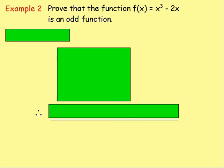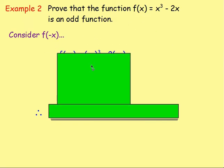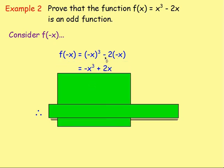Example 2: prove that the function f of x equals x cubed take away 2x is an odd function. You consider f of negative x. Replace x with negative x on the right-hand side, so we've got negative x cubed take away 2 times negative x. If you work out negative x all cubed, that gives you negative x cubed. And if you work out negative 2 times negative x, that gives you plus 2x.